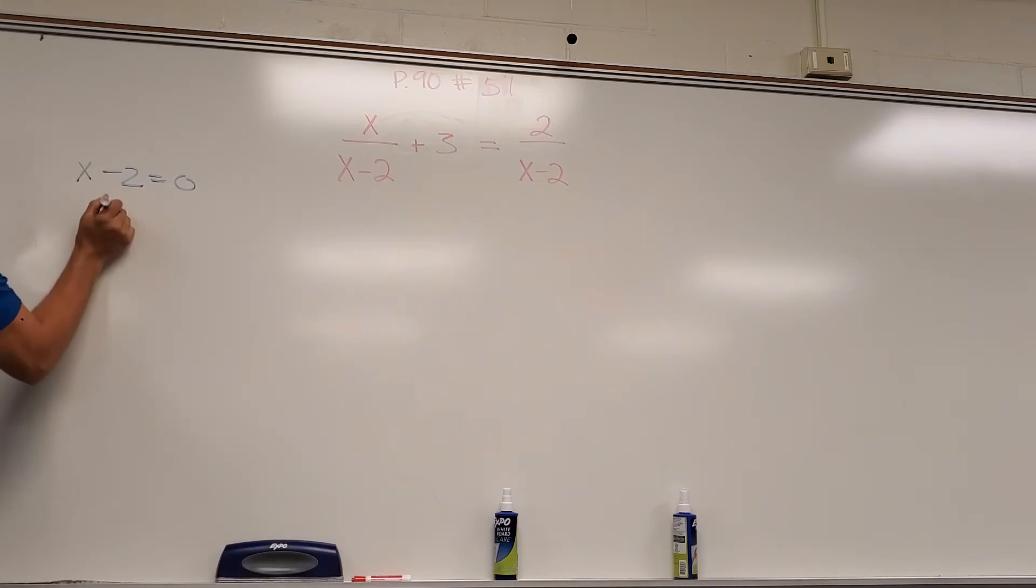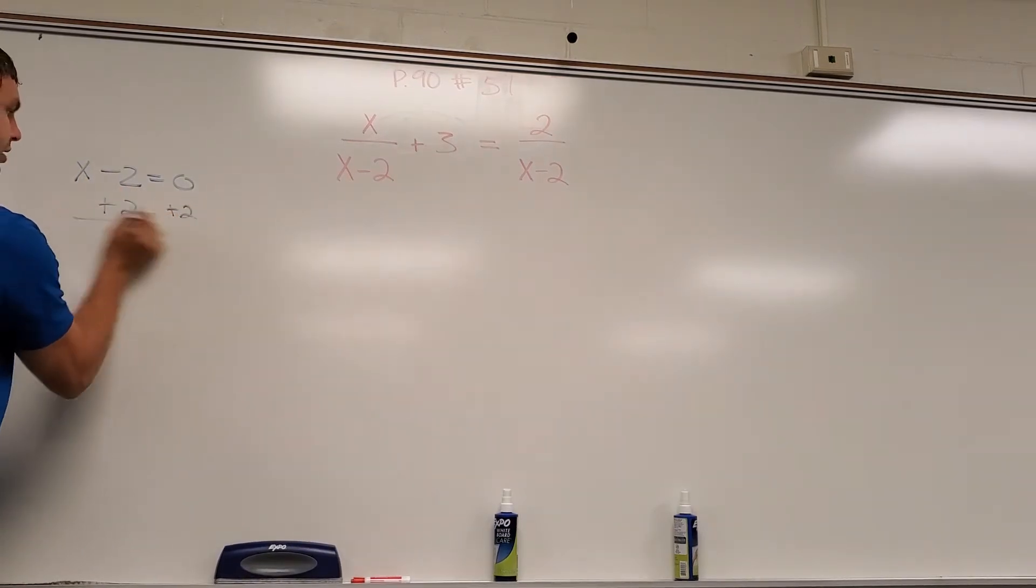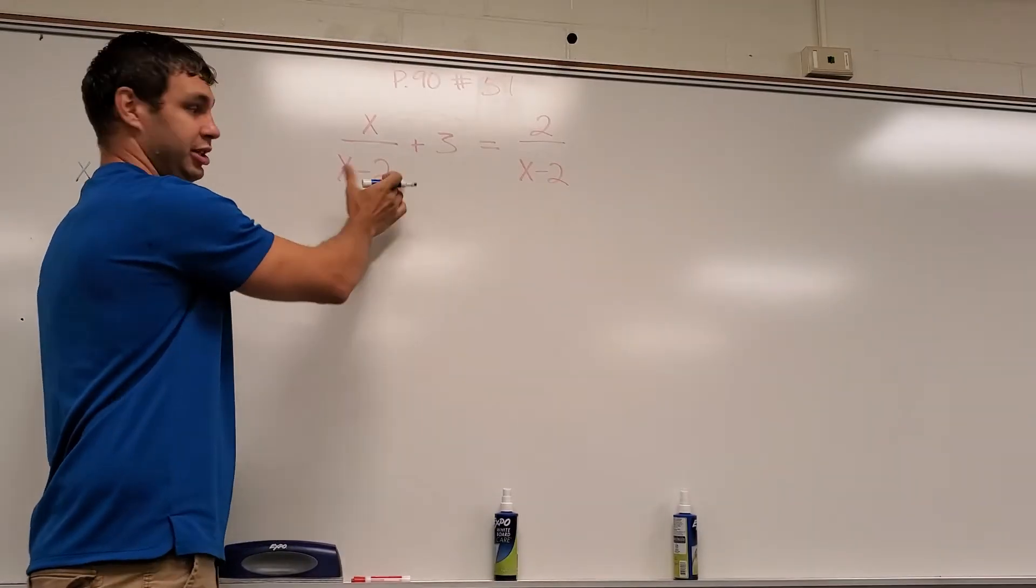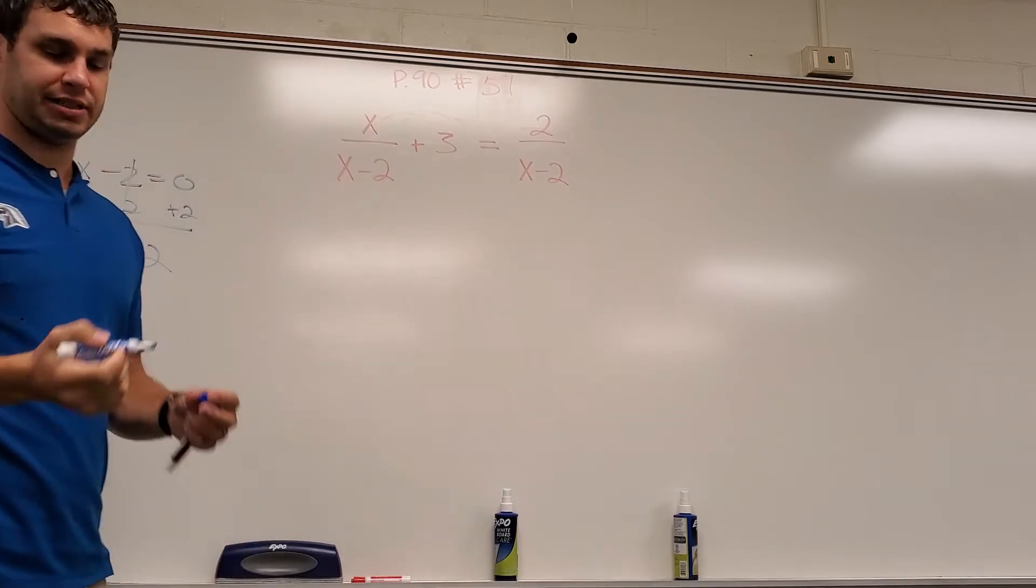So to figure out what x is, if I add 2 to both sides, then x equals 2. And that makes sense. If I were to plug 2 back in here, 2 minus 2 gives me 0. We know we cannot divide by 0, so that's not going to be a solution.